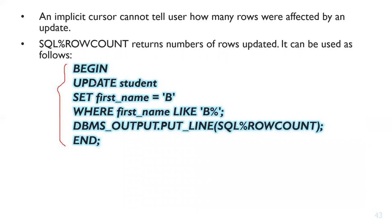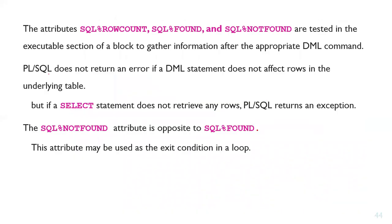Here is an example: in a BEGIN-END block, update a student table setting first name like 'B%' using a wildcard. The SQL%ROWCOUNT, SQL%FOUND, and SQL%NOTFOUND attributes are tested in the executable section of a block to gather information about the DML command. PL/SQL does not return an error if a DML statement does not affect any rows in the table.